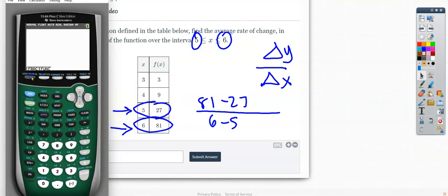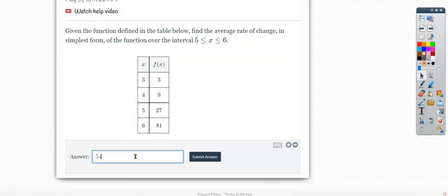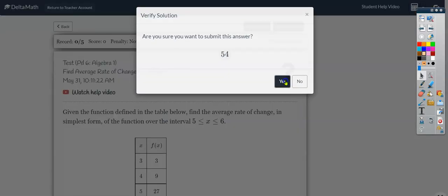You can choose to do it piece by piece, or you can type the whole fraction in your calculator by pressing alpha y equals and typing 81 minus 27, then arrowing down, typing 6 minus 5, which we know is going to be a 1. But 54 over 1 is your answer. So you're going to type 54 over 1, which is the same as 54.